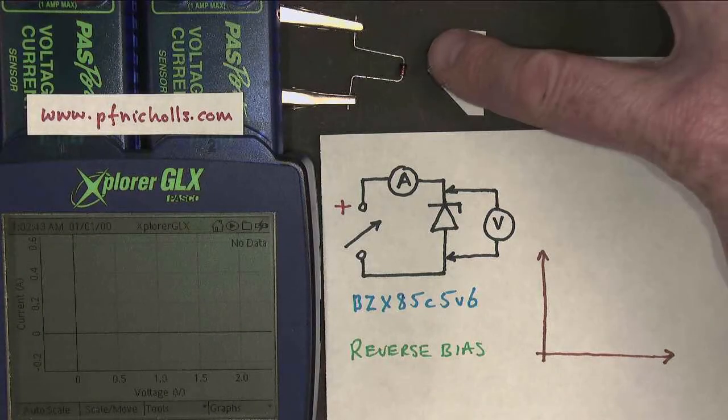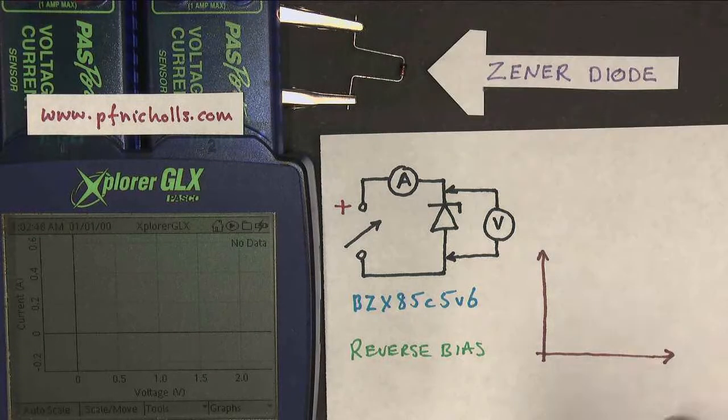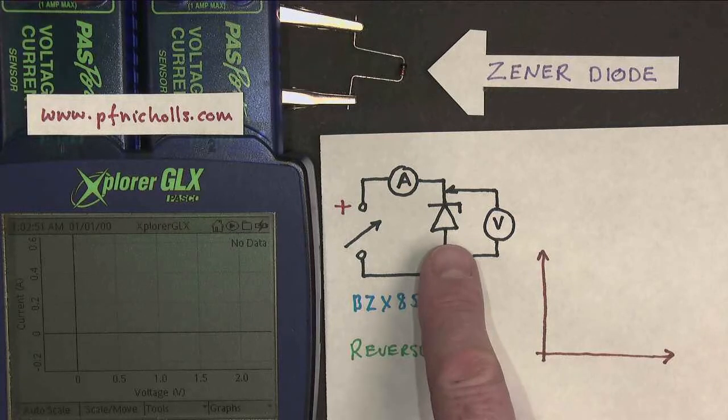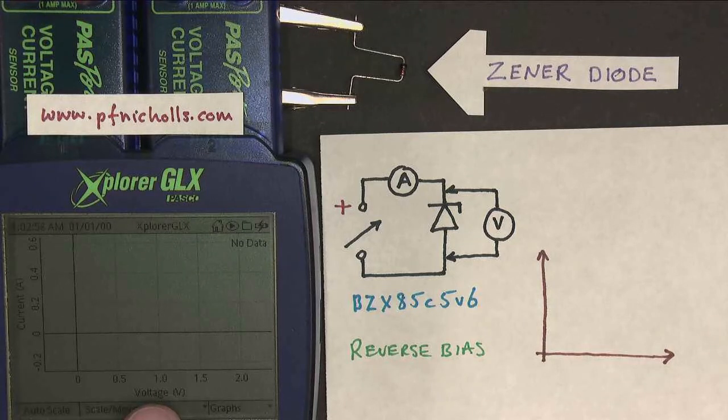What I've done now is I've reversed my Zener diode, I've turned it round like that, and the symbol on my diagram is now the other direction, so this diode is now in reverse bias. I'm going to increase the voltage again, and we'll see what happens. We would expect, if it was a regular diode, for nothing to happen. So let's have a look.